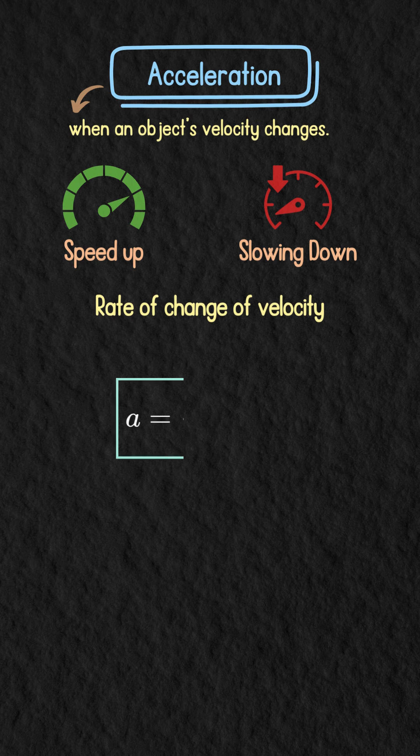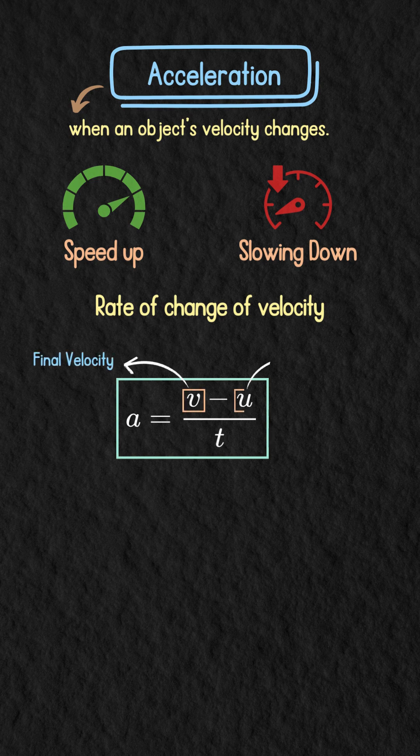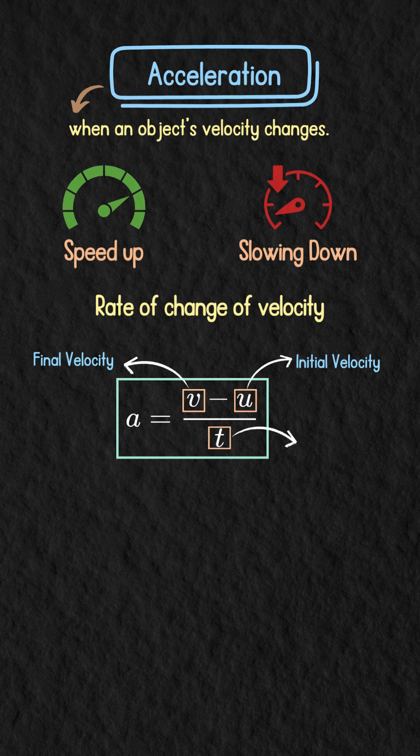The first one: a equals v minus u upon t, where v is final velocity, u is initial velocity, and t is time.